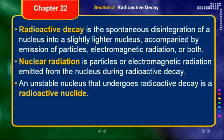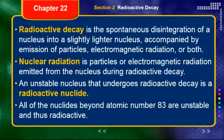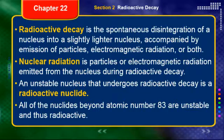Nuclear radiation is a result of radioactive decay. All nuclides beyond atomic number 83 — bismuth — are unstable and thus radioactive, and will disintegrate until they become stable.